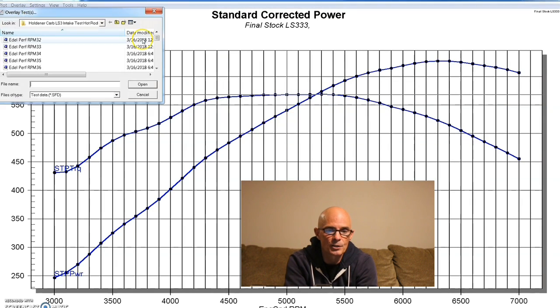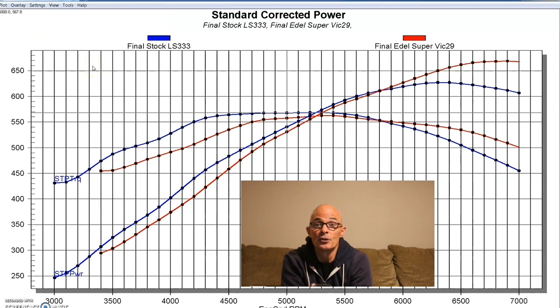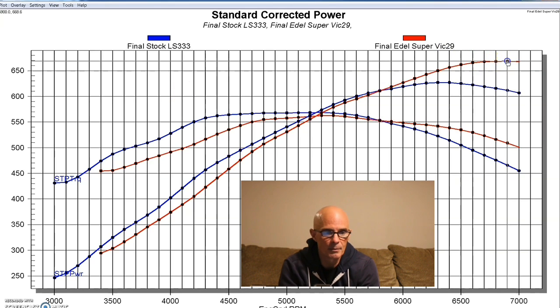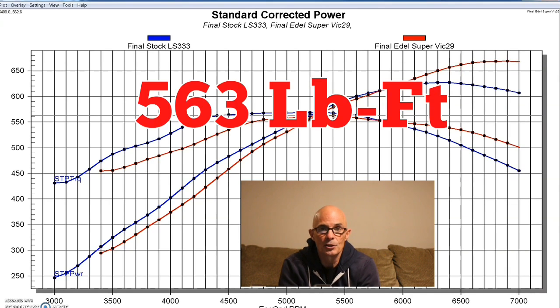So here's what happened after we installed the Edelbrock Super Victor intake. And remember this Super Victor intake was the 4500 flanged version. It was set up for port injection but we actually ran this with a carburetor on this 416 because we were testing carbureted intakes. So rather than running it as a port injected deal we ran it with a 1050 dominator and the only difference is the intake acts the same. It's just that the carburetor tends to add some charge cooling from the fuel and so it makes a little bit more power usually than the EFI version. But the intake acts the same. So equipped with the Edelbrock Super Victor this thing made 669 horsepower and 563 foot pounds of torque.